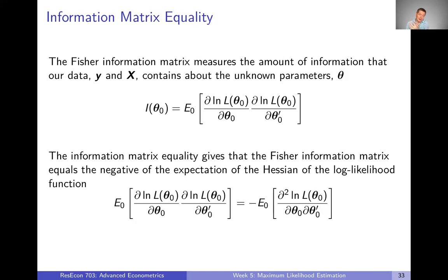The next thing to talk about is zooming out to the expectation term that gets inverted. The Fisher information matrix measures the amount of information that our data contain about the unknown parameters. It's defined as that expression, and for maximum likelihood there's a classic result known as the information matrix equality: the Fisher information matrix equals the negative of the expectation of the Hessian of the log-likelihood function.